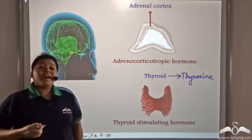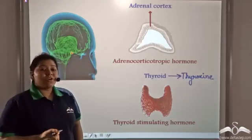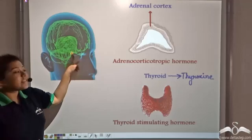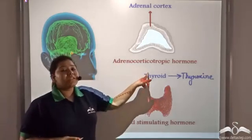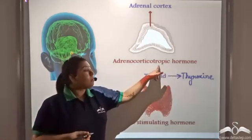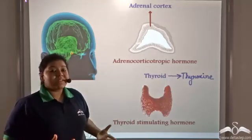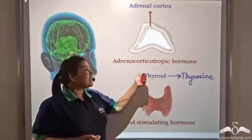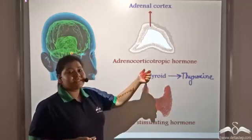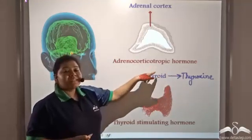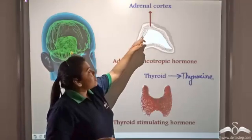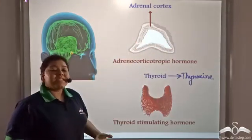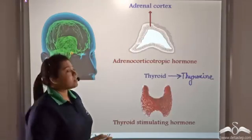Another hormone that the pituitary gland secretes is the adrenocorticotropic hormone. Tropic means to stimulate. As the name suggests, this hormone stimulates the adrenal cortex to liberate and secrete its cortical hormones.